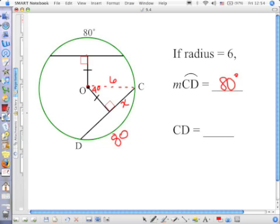Right. You divide 80 by 2. So sine of 40 equals X over 6. Very good. And then you find your answer.